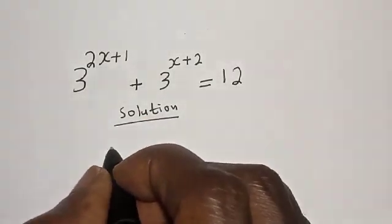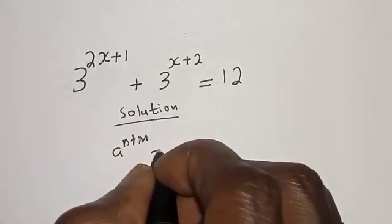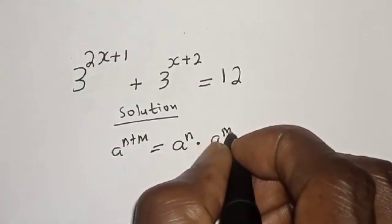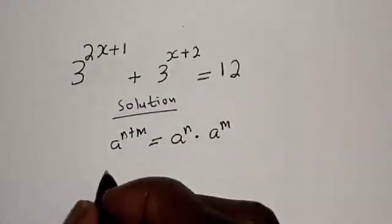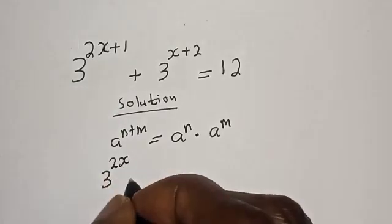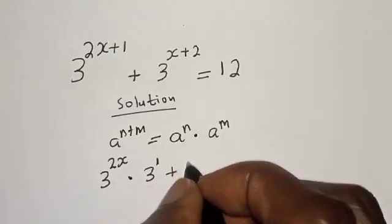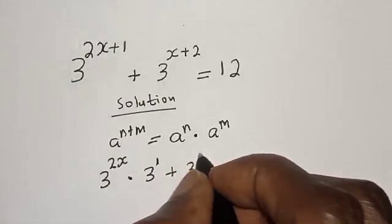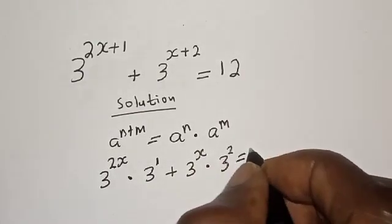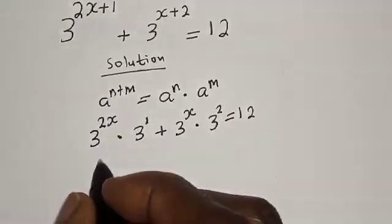Take note of this exponential rule: a raised to power n plus m is equal to a raised to power n multiplied by a raised to power m. Then this becomes 3 raised to power 2s multiplied by 3 raised to power 1, plus 3 raised to power s multiplied by 3 raised to power 2, is equal to 12.